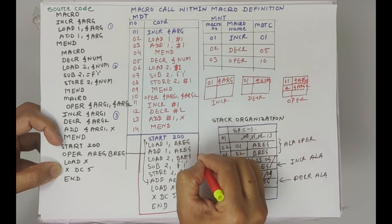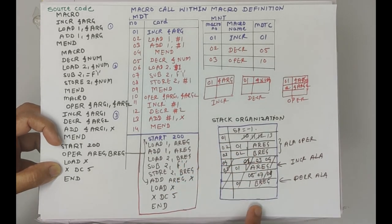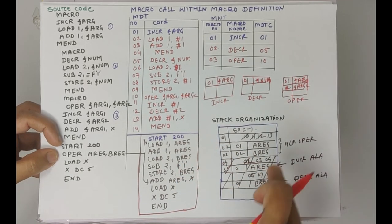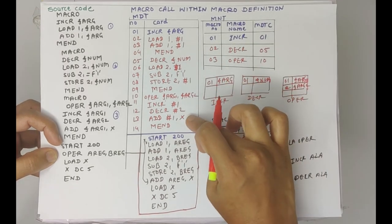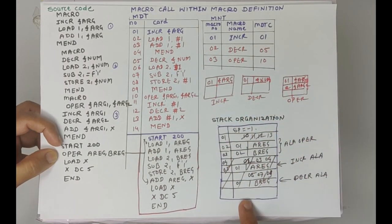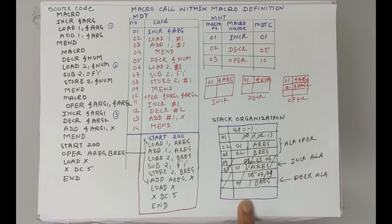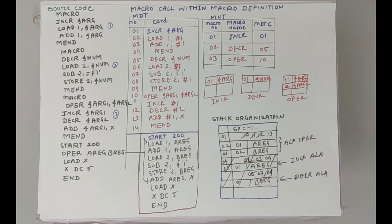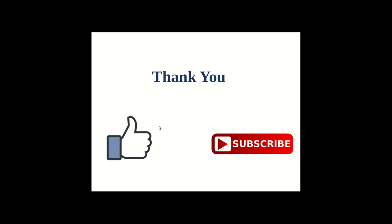This is the target code. This is the stack organization. This is the MNT, then MDT, and these are the ALA tables. In exams, such questions ask you to show the stack organization — these stacks are used in macro call within macro definition type of problems. Thank you. If you like this video, click the like button, subscribe to the channel, and click the bell button to get notifications of new videos. Thank you.